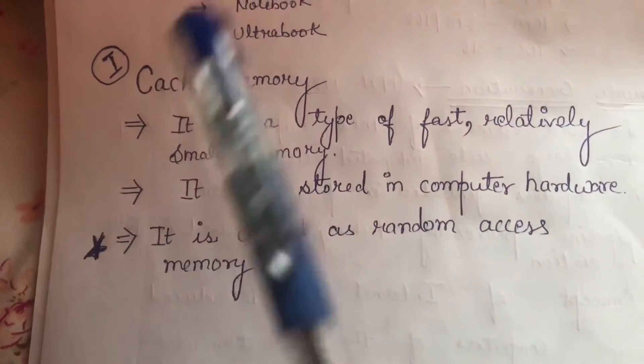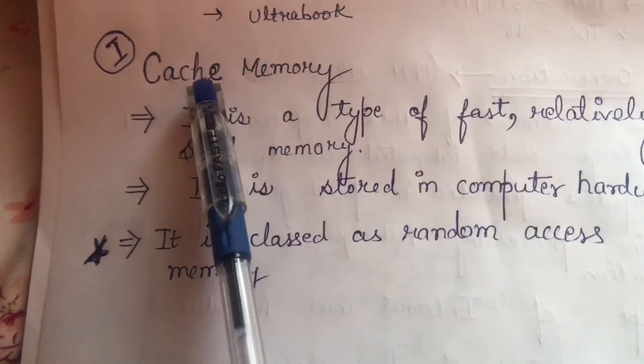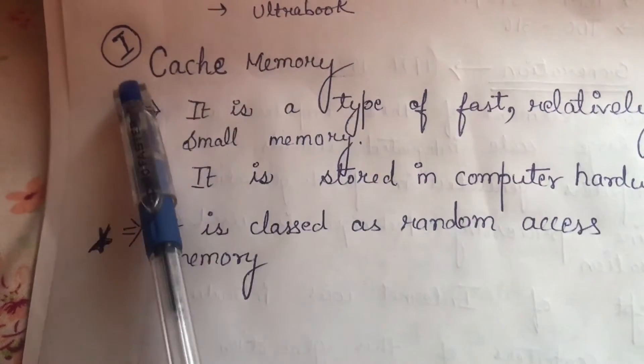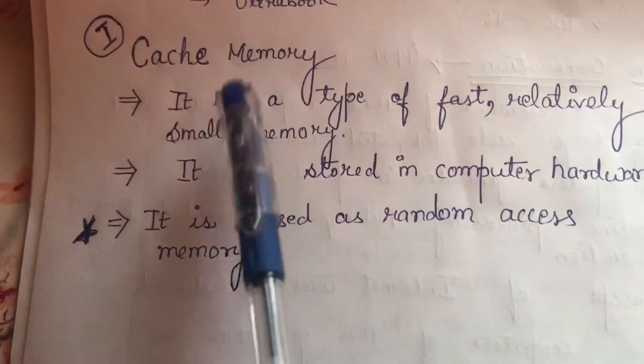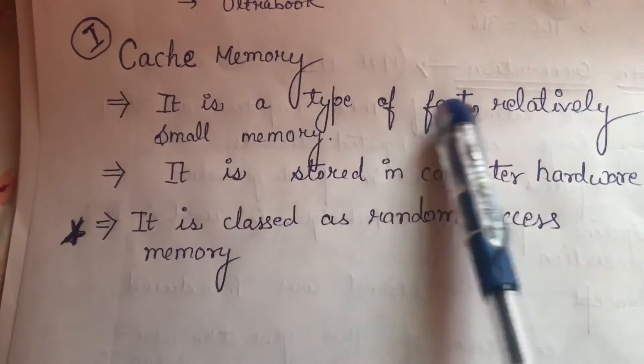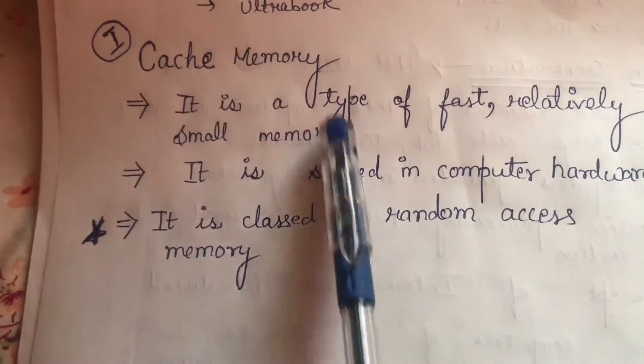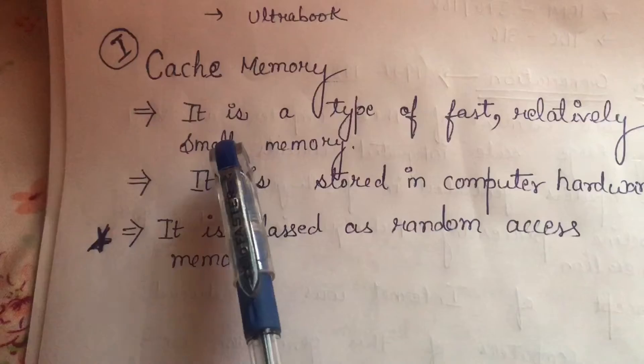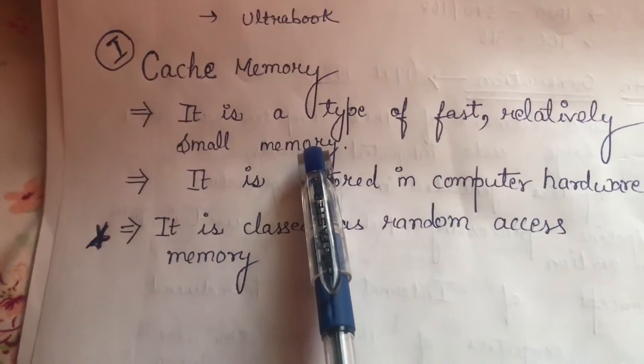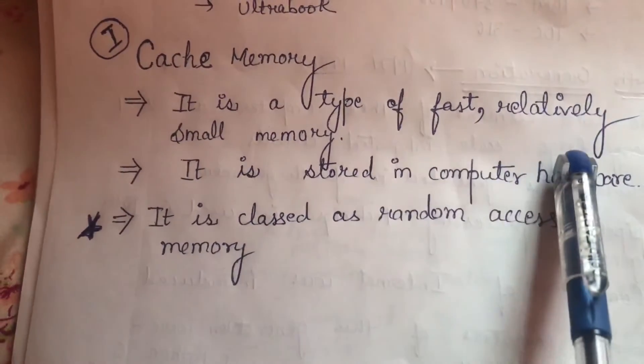Hello students, today we are going to cover the most important topic which is cache memory. It is a type of fast and relatively small memory. It is stored in computer hardware.